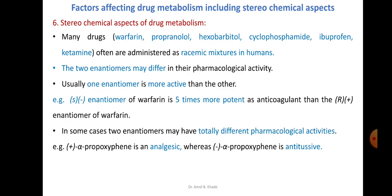For example, the S enantiomer of warfarin is five times more potent as an anticoagulant than its corresponding R enantiomer. In some cases the two enantiomers may have totally different pharmacological activities — for example, dextrorotatory alpha-propoxyphene has analgesic activity, while the levorotatory enantiomer (alpha-minus-propoxyphene) has a totally different action as an antitussive. By changing from one enantiomer to the other, the pharmacological activity also changes.